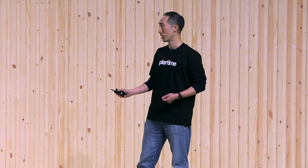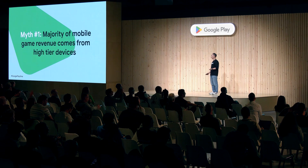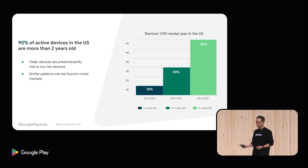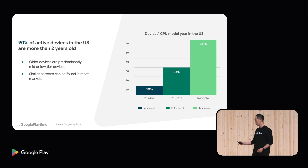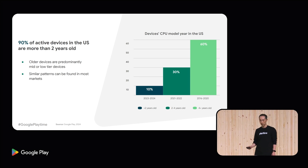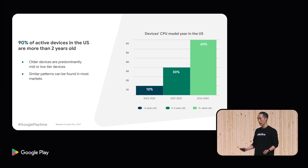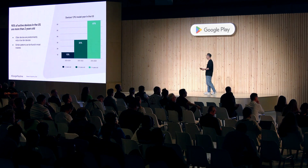One of the things that I hear the most from the developer is that the majority of the game's revenue comes from high tier devices. I brought data which will be very interesting for you. This is the device's CPU model year in the US. In the Android world, there are several-years-old devices that are still active. For example, the light green bar — which is 60% — represents devices from 2016 to 2020. 30% of the devices are from 2021 and 2022. Only 10% of devices are from 2023 and 2024. Not all of them are high tier devices. So you need to take care of the 90% which are older than two years old or even longer.